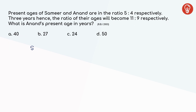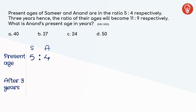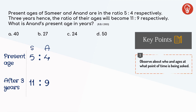We are given Samir and Anand's present age ratio as 5:4, and after 3 years the ratio of their ages is 11:9. Focus on the key point — we are asked to find Anand's present age. Anand is representing the number 4, so our answer should be divisible by 4. 27 and 50 cannot be our answers as they are not divisible by 4.